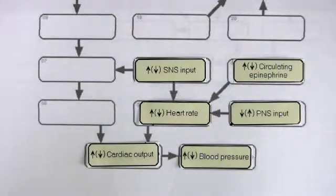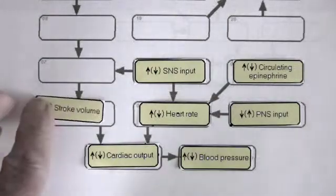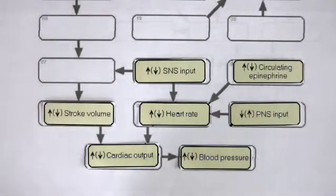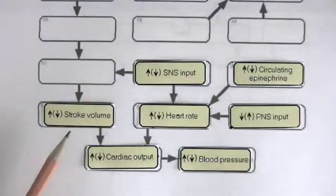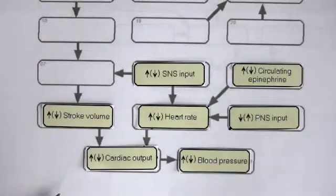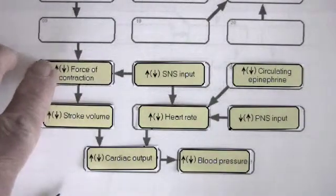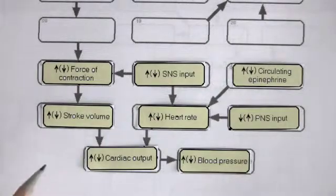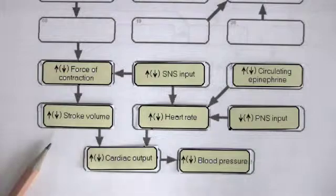The other factor that affects cardiac output is stroke volume. Stroke volume refers to the volume of blood pumped per beat by each ventricle. What are the factors that affect stroke volume? Stroke volume is influenced by the force of contraction. If you increase the force of contraction, you increase the volume pumped per beat.